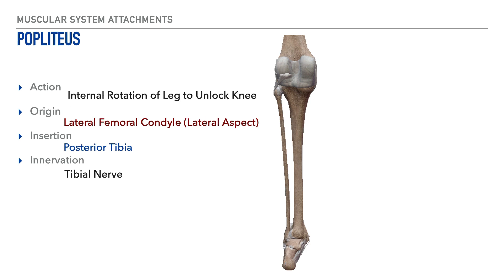The next muscle is the popliteus, which is responsible for unlocking the knee when it's in an extended position, occurring through a type of internal rotation at the knee. Its origin is on the lateral aspect of the lateral femoral condyle. Its insertion is on the posterior aspect of the tibia, and its innervation is the tibial nerve.